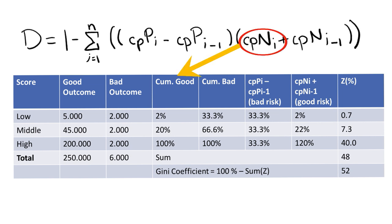The CPN in the Gini coefficient formula refers to this cumulative percentage of customers with good outcomes, with I representing the number of rows. CPP, on the other hand, represents the cumulative percentage of customers with bad outcomes, shown in the cumulative bad column. We obtain the cumulative bad values using the similar method that we use for the cumulative good.